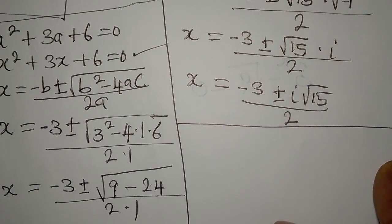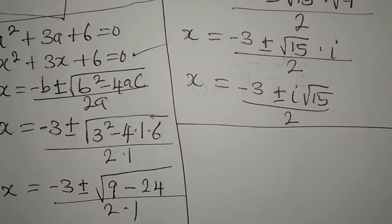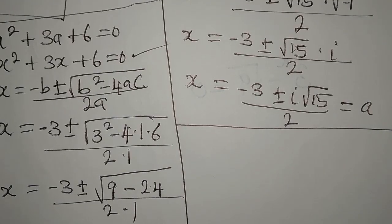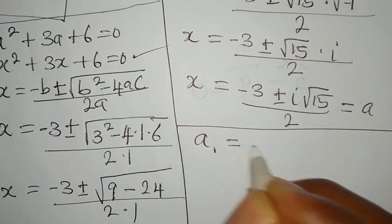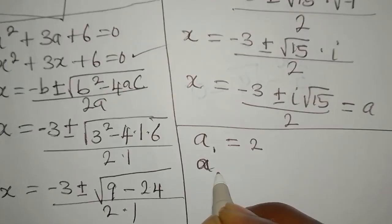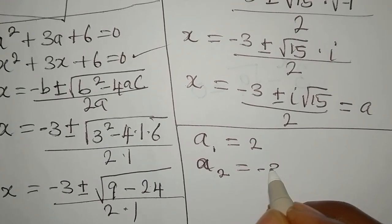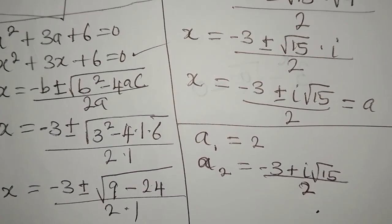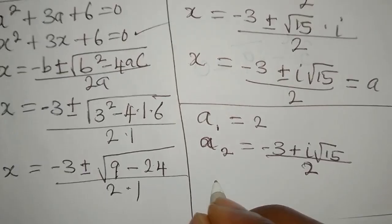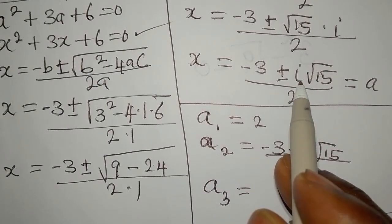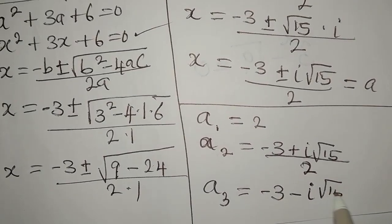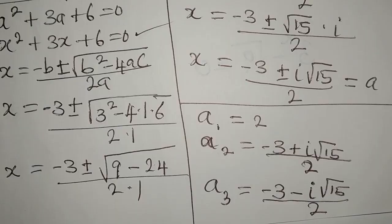We should have three solutions in total. Note that x and a are the same variable. So: a₁ = 2, a₂ = (−3 + i√15) / 2, and a₃ = (−3 − i√15) / 2. These are the three solutions to the equation a³ + a² = 12.